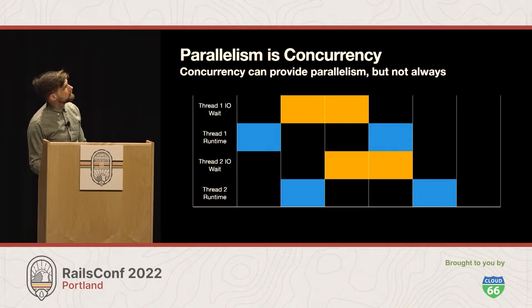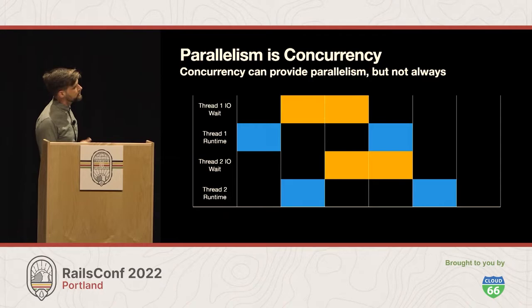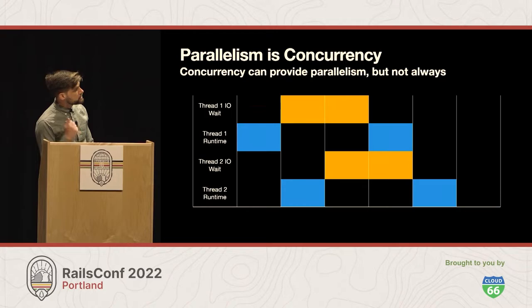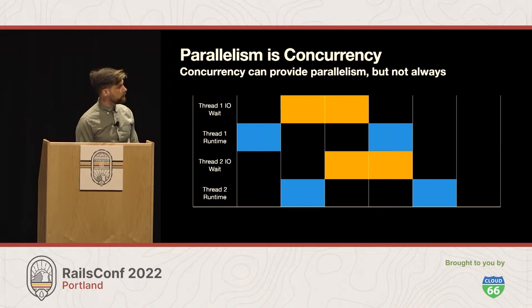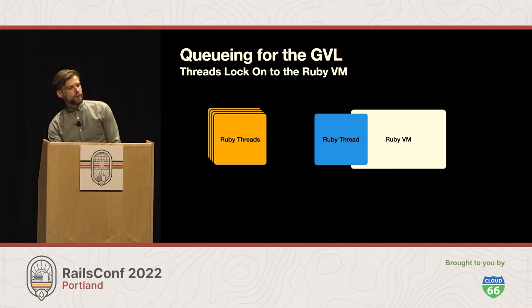In this diagram, you see IO wait in yellow — that could be a network request where thread one starts processing a request and waits on the network response. When the response comes back, it can do whatever Ruby it needs to — send a request back, or for a background job, download an image and then process it. Thread two can actually pick up where thread one left off when it started waiting, start its own process, wait for its network request, wait for the IO to come back, and process again. It's not as fast as having a separate process, but we did save a little time — a fraction of parallelism from our concurrency. This goes into queuing for the global virtual machine and thread locking.